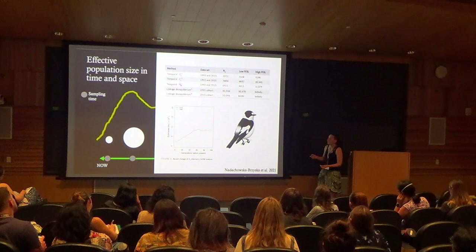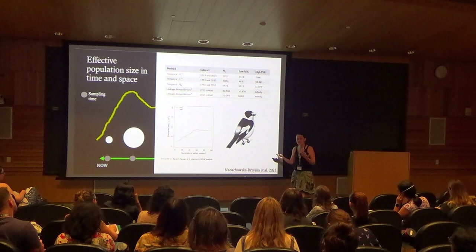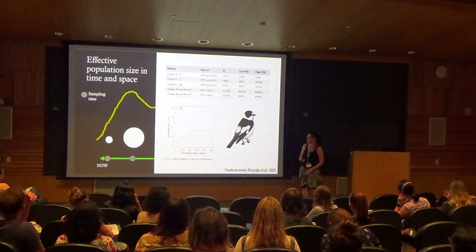We used GONE analysis to draw a recent Ne trajectory over time, and we actually see that this population has been declining over recent years. So to sum up, depending on the method you use and the data you have, in a declining population you may get very different results for the actual contemporary effective population size you're interested in.